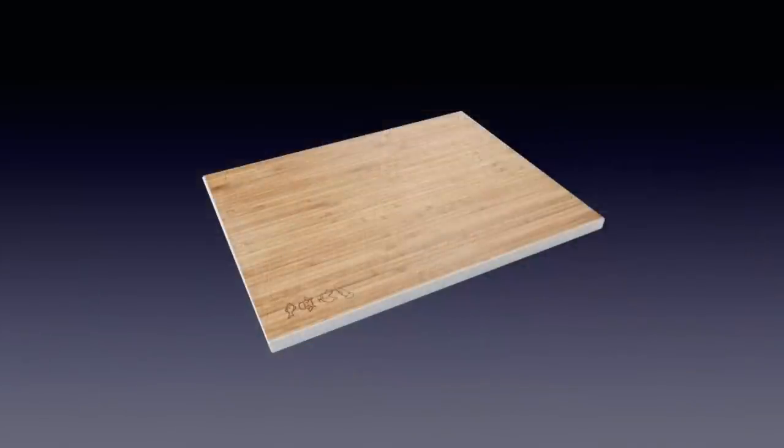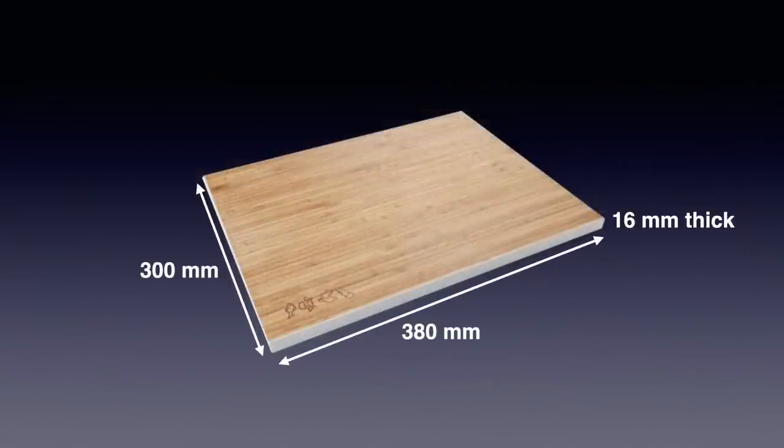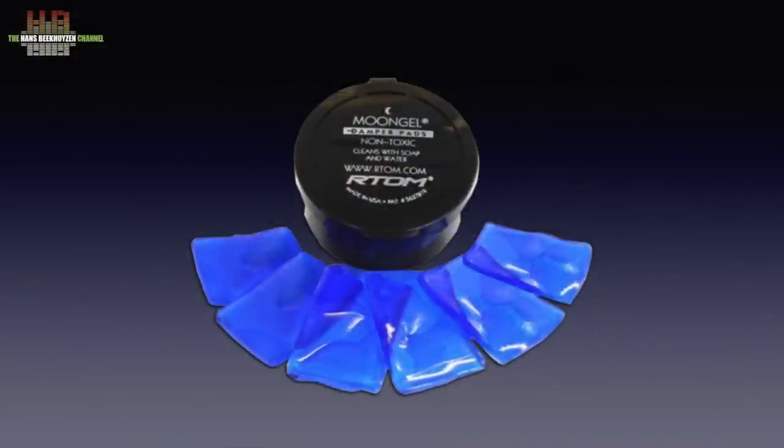Bamboo cutting boards are supposed to have less resonance than other wood boards, though I have not researched that specifically. The boards I used are 380 by 300mm and 16mm thick, with a plastic trim along the rims and bottom. They were picked for their dimensions so they would nicely fit the MU1 and the Dave, and were bought from a kitchen gear shop at 15 euros each including VAT. The Arthur Moon Gel came in sets of 6 in a kind of pill box at 7.85 euros per set including VAT, bought at a musical instrument shop. Since they are US products, they should be available worldwide and can also be found on Amazon.